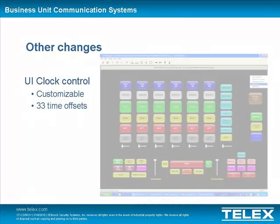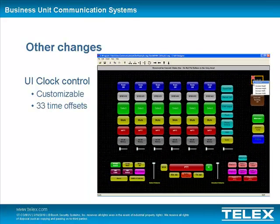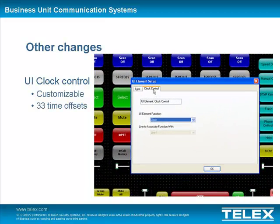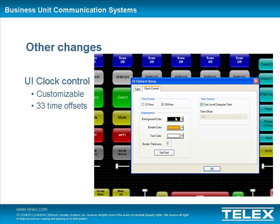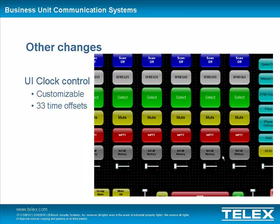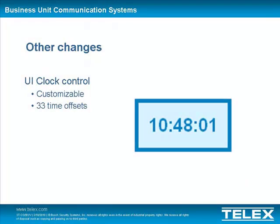The Clock Control is a new user interface type for CSoft. The Clock is a customizable control which can be used to either display the local time or the time of any of the world's 33 time offsets. The clock can be added through either the Insert menu or the right-click menu. It can be moved, resized, and copied in the same manner as the existing UI button and UI volume controls. The Clock Control property page allows the user to customize the appearance of the clock and determine what time the clock should display.